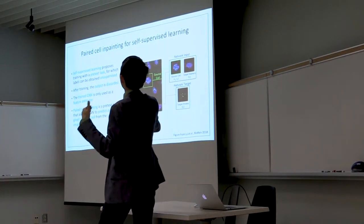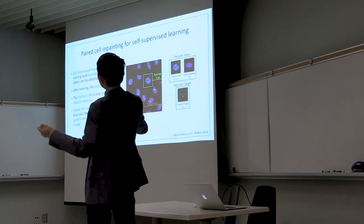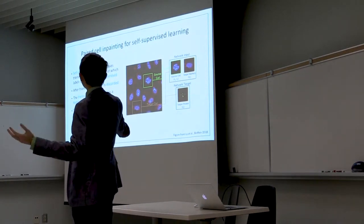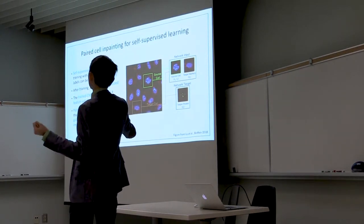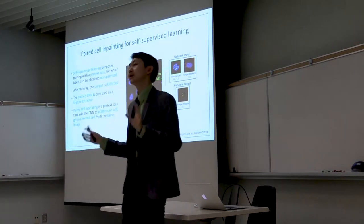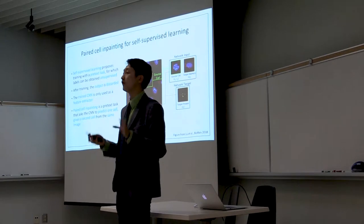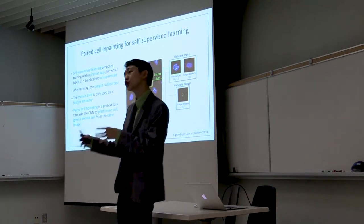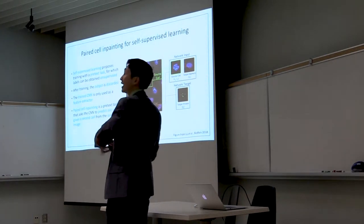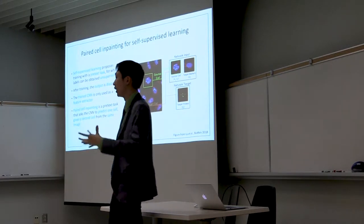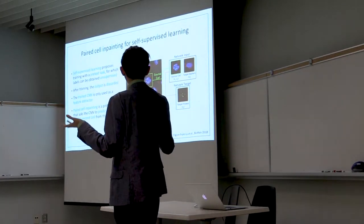We propose training on a pretext task for which labels can be obtained unsupervised. After training, the output is discarded, and the trained CNN is only used as a feature extractor. So what this means is that when we define a training task for the CNN, we don't have to do something that is useful for us, but it has to teach the neural network to learn good features. Now, that's a bit abstract, but hopefully I've clarified it in introducing our new method.